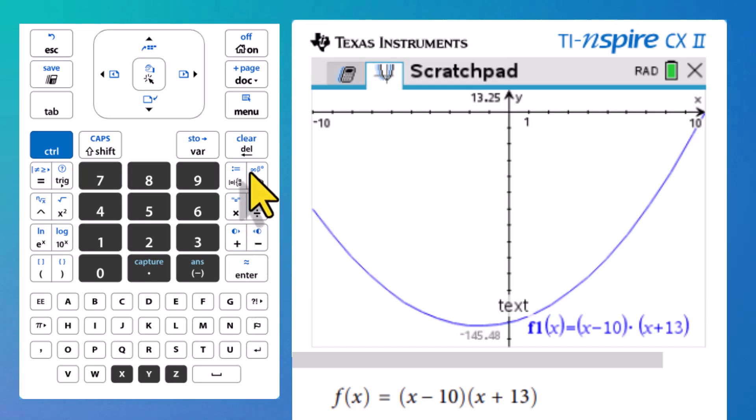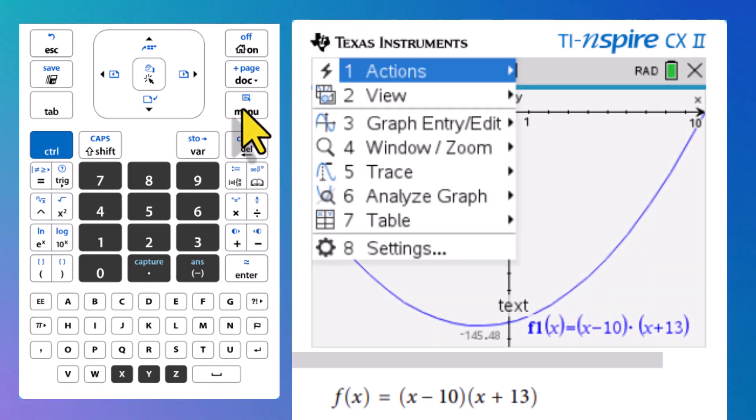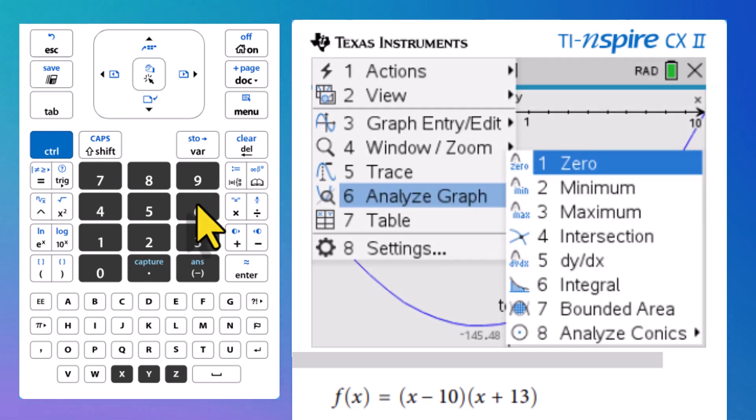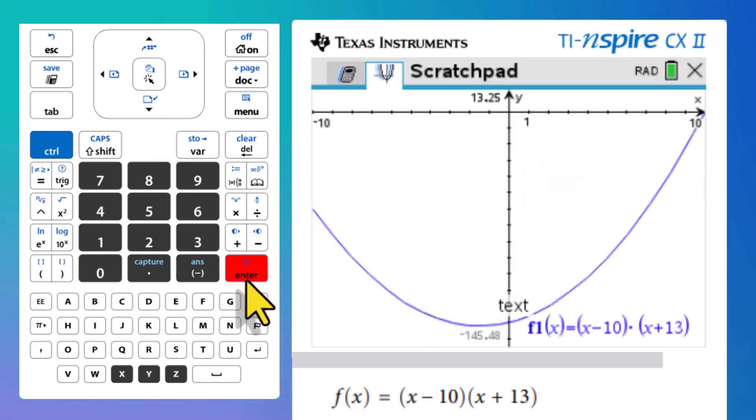Now let's do the minimum. So back to menu, we want to analyze this graph, which is number six. So I'm going to hit number six. And we want a minimum, maximum is right there as well. So I want a minimum, arrowing down to minimum, and then enter.